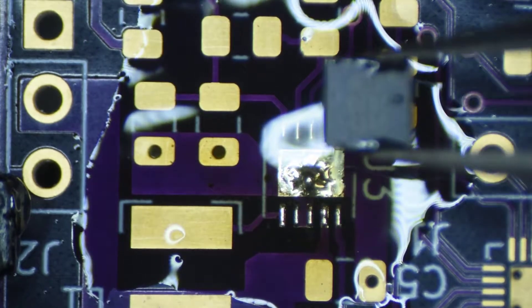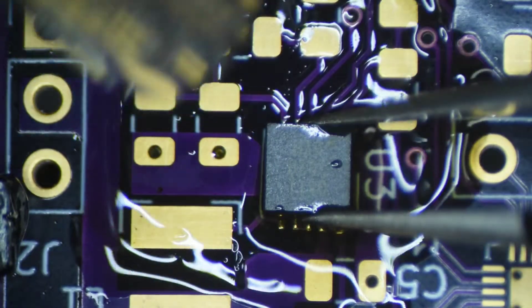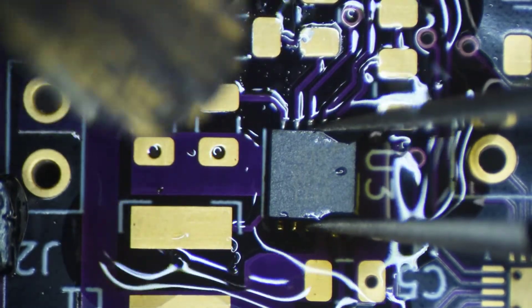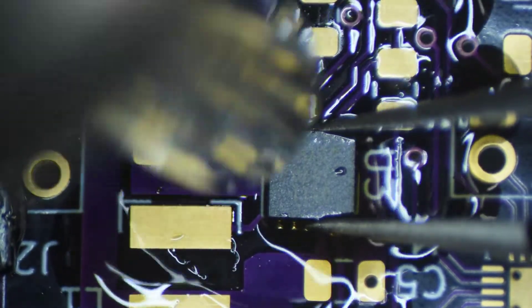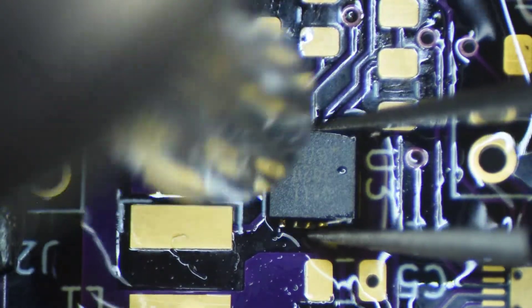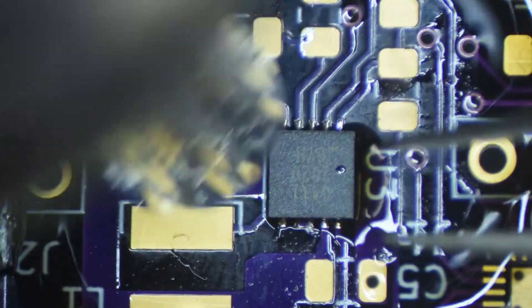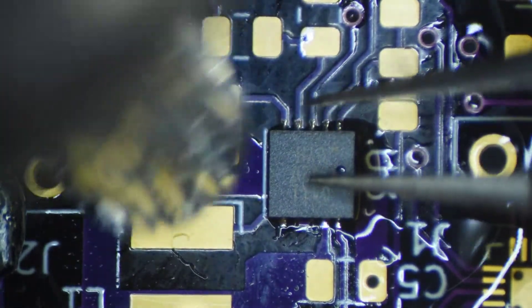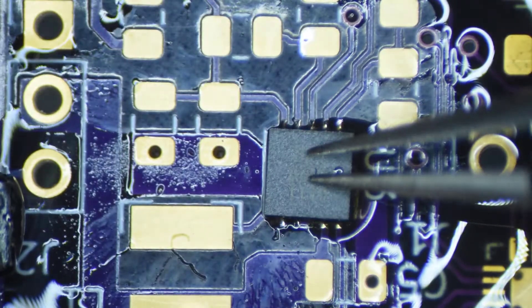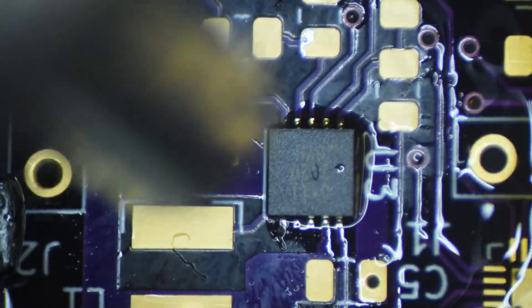Still too much solder on the thermal pad here. I don't know if I had the right amount of solder on the thermal pad. Would it even be necessary to push down on the chip? But pushing down on it did seem to make for a successfully soldered part.